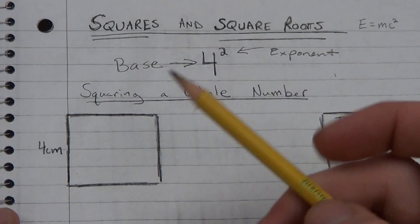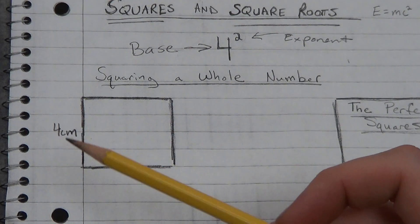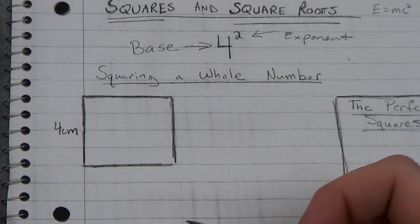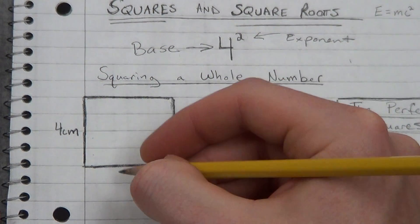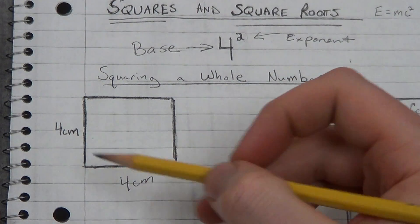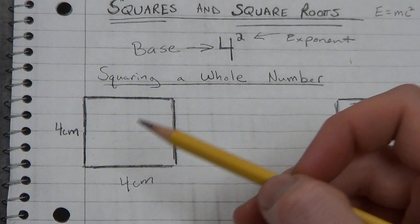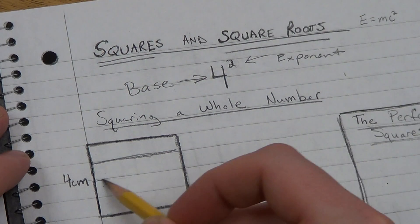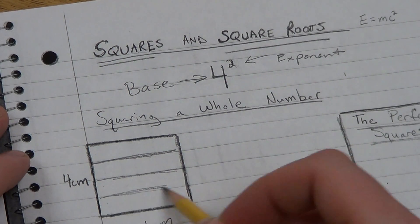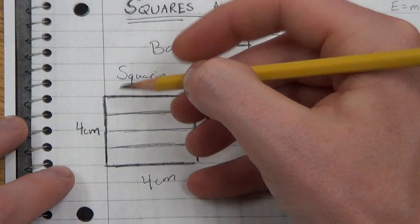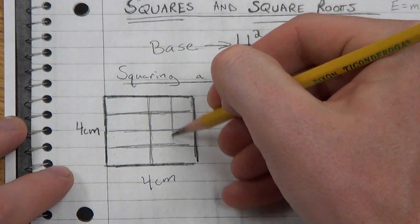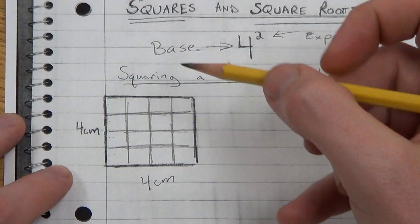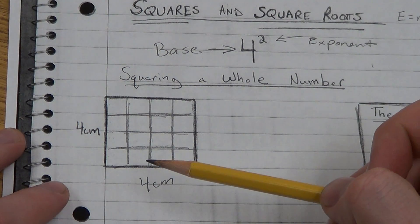So here I drew a square and the square is 4 centimeters long. Now if you know anything about squares, squares are the same length on all sides. So this square would be 4 centimeters by 4 centimeters. If I was to find the area of this, area is calculated in square units. So I have 4 units cutting the square this way, 4 centimeters, and then I have 4 units going this way.